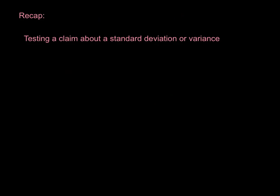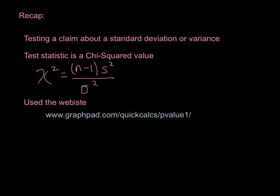Just a quick recap: we are testing a claim about a standard deviation or variance in this section — we did proportions in 8.3, means in 8.4 and 8.5. Our test statistic is a chi-squared value: our formula is degrees of freedom n minus 1 times our sample standard deviation squared over our population standard deviation squared. We used technology at graphpad.com/quickcalcs/pvalue1 to find the p-values given the chi-squared value, our test statistic, and our degrees of freedom. Once we found the p-value, we had the same rules comparing the p-value to the significance level.